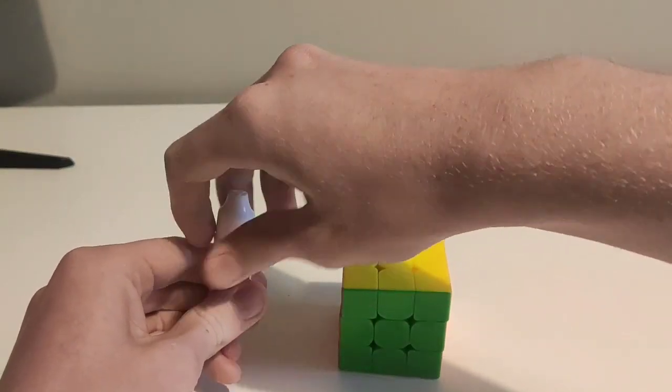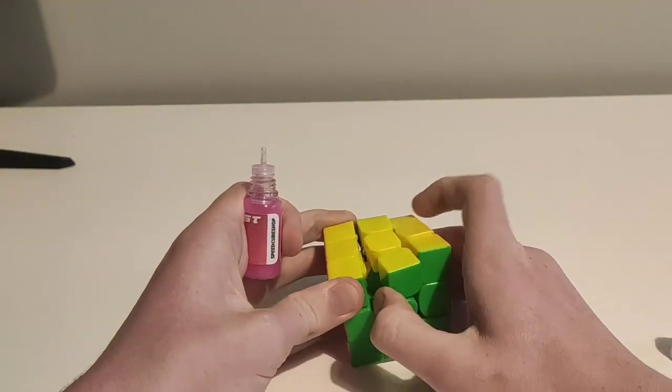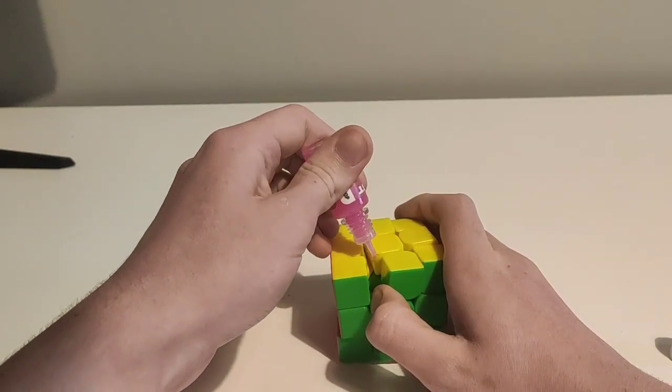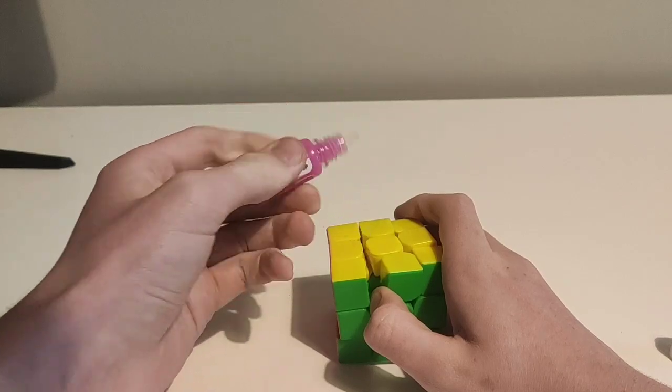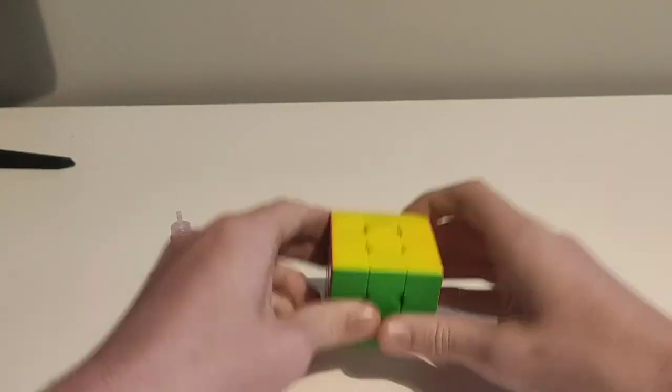Stardust is a water-based cube lube from Speedcube Shop. It costs 10 US dollars for the 10ml bottle, so a dollar a milliliter, which is the same as most of the premium lubricants from Speedcube Shop and The Cubicle.